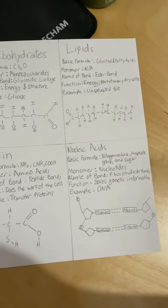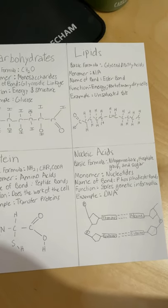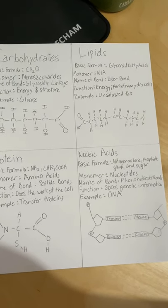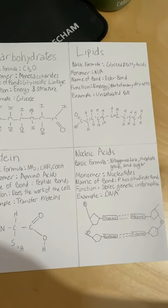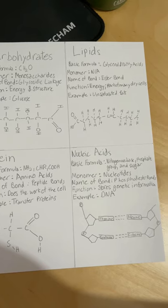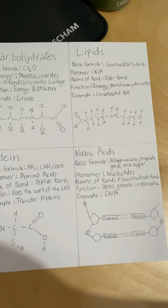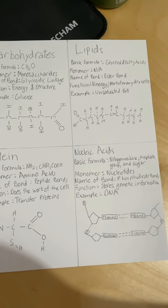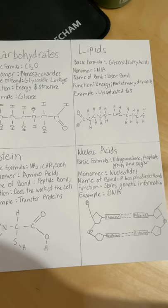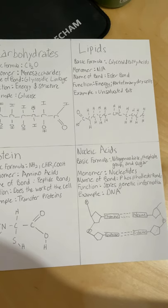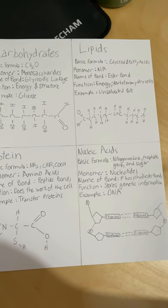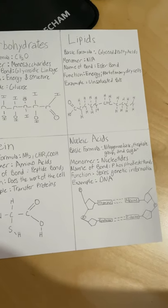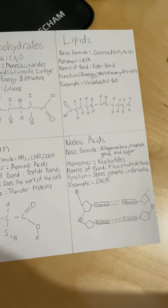Nucleic acids: the basic formula would be a nitrogenous base, phosphate group, and a sugar. Its monomer is nucleotides, and the name of the bond would be phosphodiester bonds. Its function would be storing genetic information. An example would be DNA, and right there is what DNA would look like.